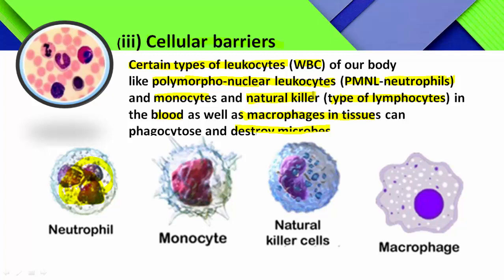Examples for cellular barriers: PMNL neutrophils, monocytes — here you can see the image of monocyte — and natural killers. All these are circulating in the blood, and tissue macrophages are also capable of carrying out phagocytosis.